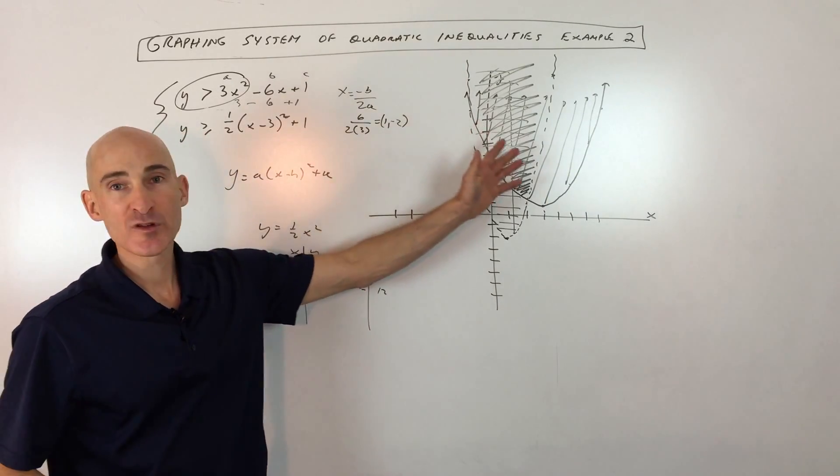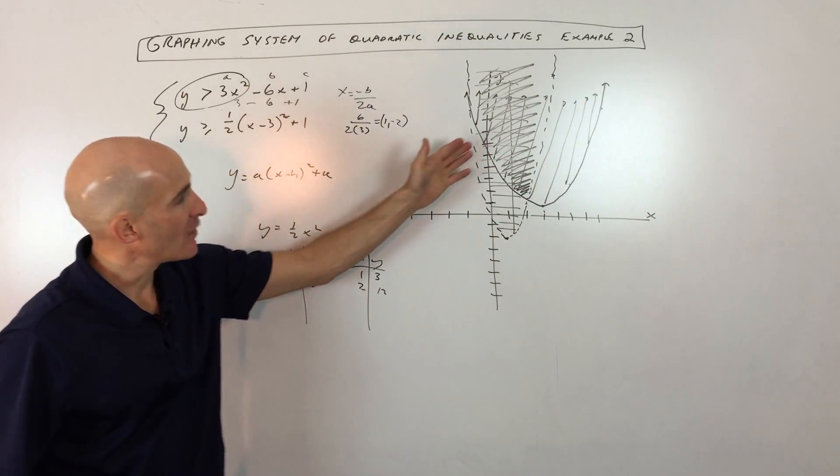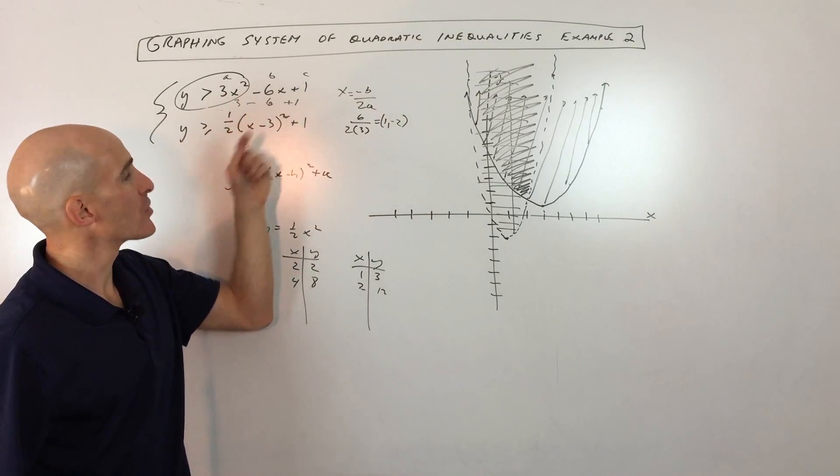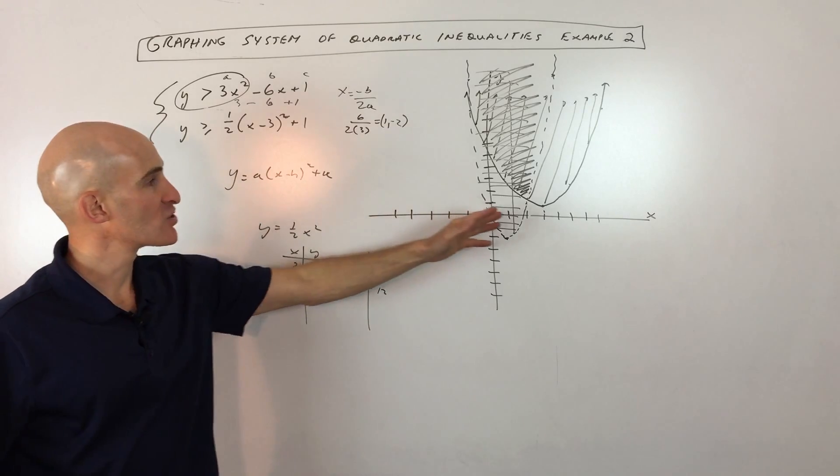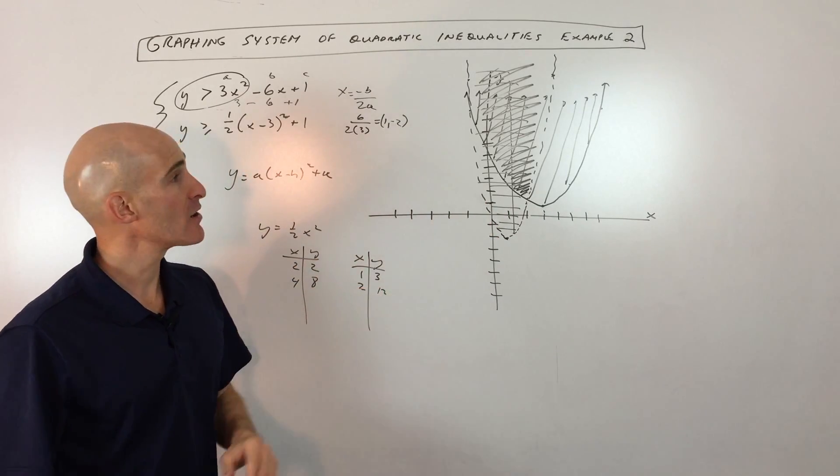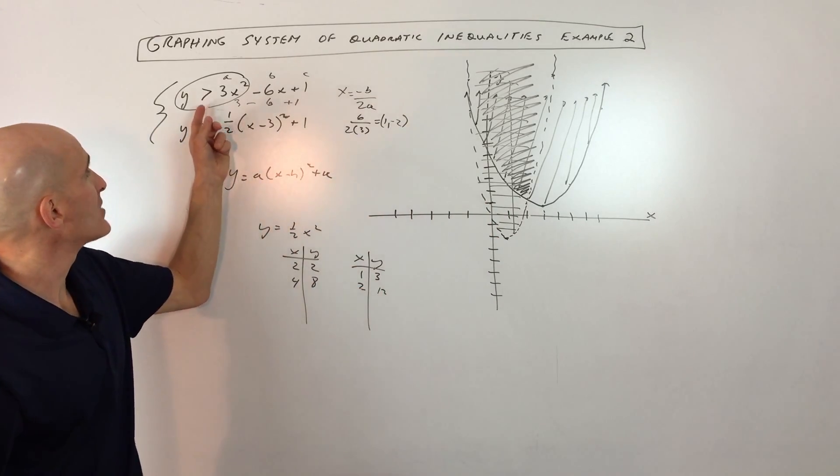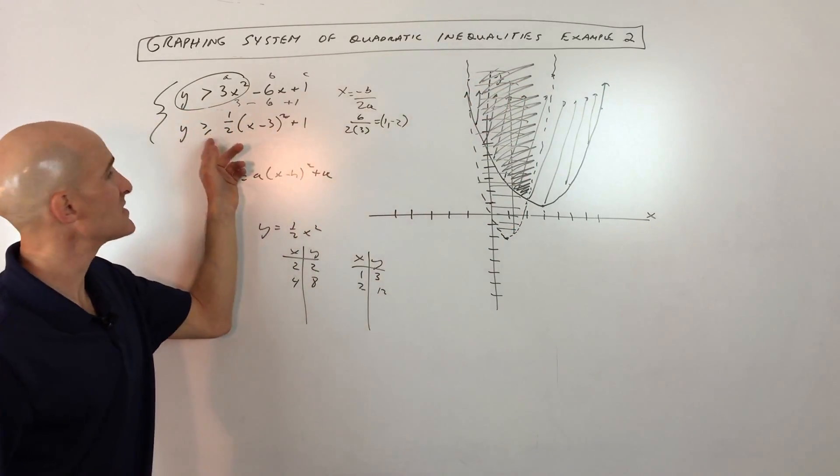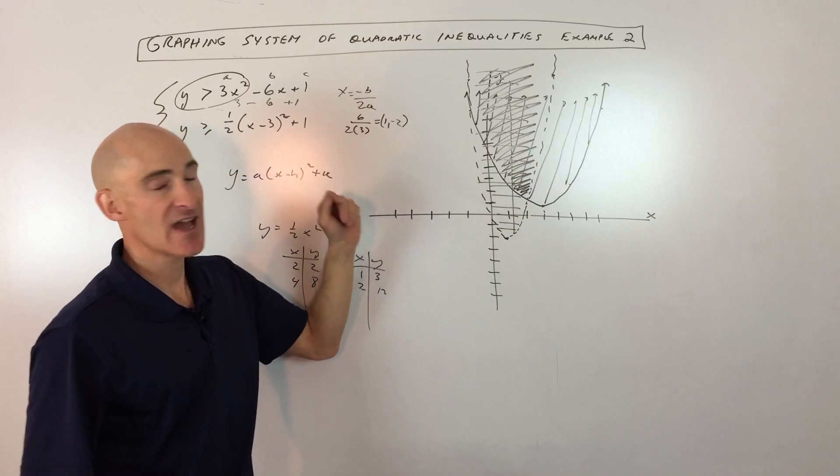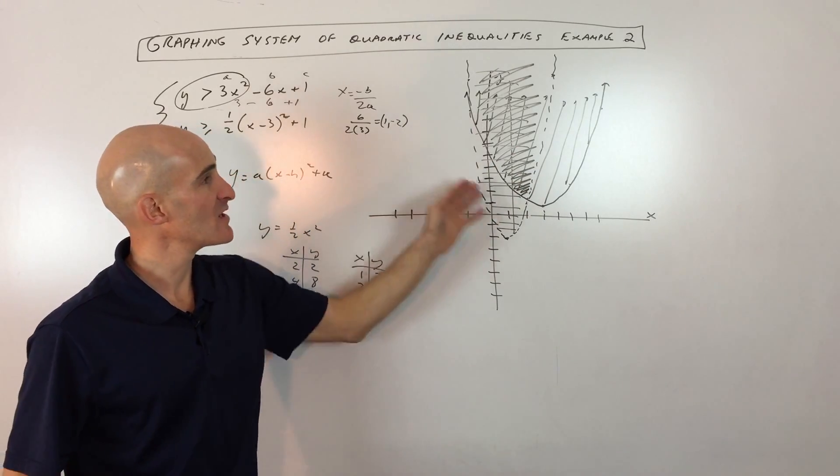Now, I could have been a little bit more precise with my graph. For example, I could have found the y-intercept by setting x to 0. That would have been a good additional point. I could have also just plotted additional points besides the ones I just did here. But the main point I wanted to point out is if it's greater than, you're shading above the graph, less than, you're shading below. If it's equal to, it's a solid line. If it's not equal to, just like less than or greater than, it's going to be a dashed line.